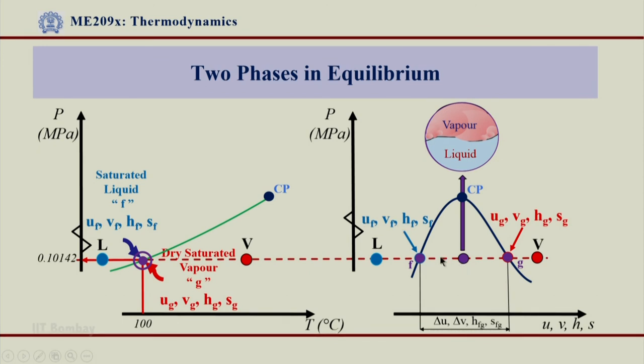Again, point to be noted is as the pressure increases, this delta u, delta v, hfg, and sfg start decreasing because this length gets decreased. You can notice that at point Cp...